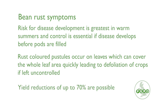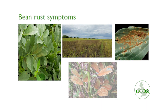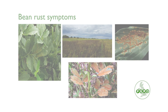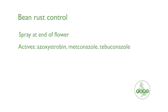Yield reductions of up to 70% are possible. Risk for disease development is greatest in warm summers and control is essential if disease develops before pods are filled. The best actives for rust control are azoxystrobin and tebuconazole, and these should be applied at late flower.